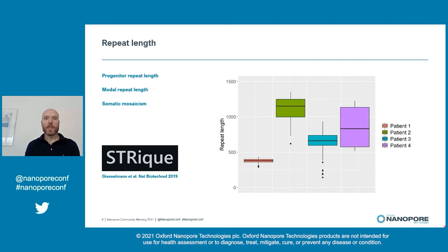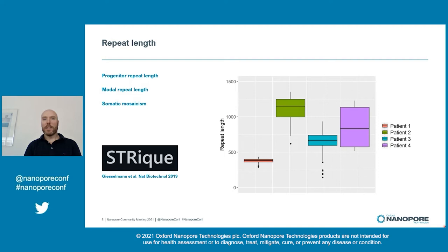First we looked at the repeat length using the program STRIKE, and we were able to determine both the progenitor allele, which is defined by the shortest repeat. We determined the modal repeat length and were able to assess the somatic mosaicism. As seen from the figure, patient 1 has the shortest mosaicism range, and this patient is also the youngest at 16 years of age, and is known from triplet prime PCR to carry repeat interruptions, so this was expected.